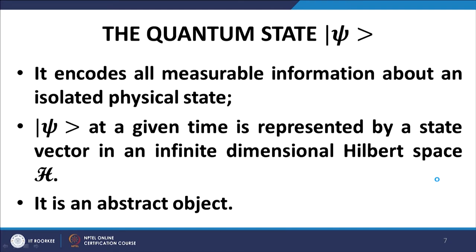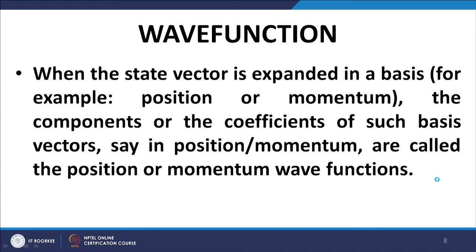I moved over to the discussion on the construction of a moving basis, but a bit of preliminary knowledge would help. The first thing we encounter is the quantum state, in contrast to the classical state of a system which is usually represented in configuration space or in phase space — velocity or momentum phase space. In contrast, the quantum state which encodes all measurable information is represented in a Hilbert space, which is a complete space with an inner product defined on it. The second important concept is the wave function: if we expand the state vector in a particular basis, such as the position basis or the momentum basis, then the coefficients of those basis vectors represent the wave functions in that basis.